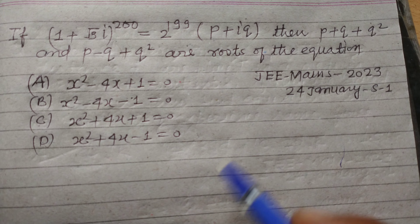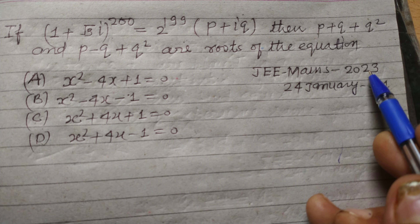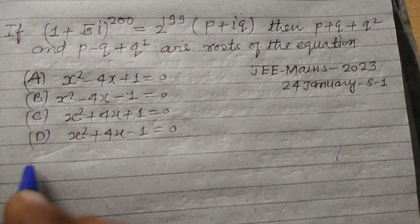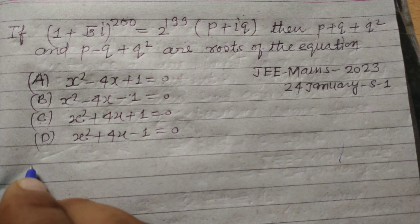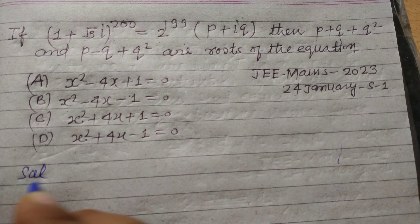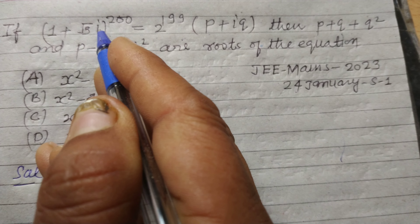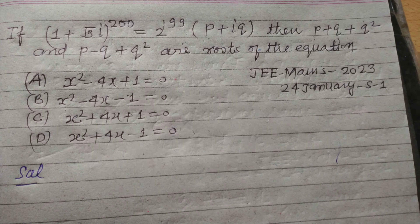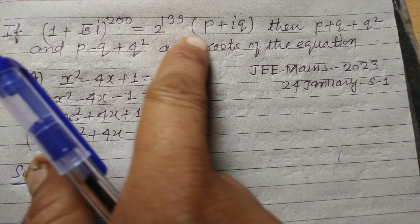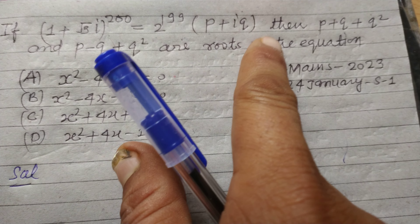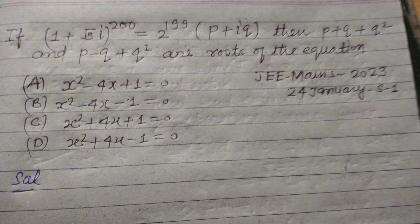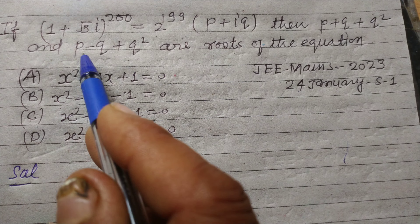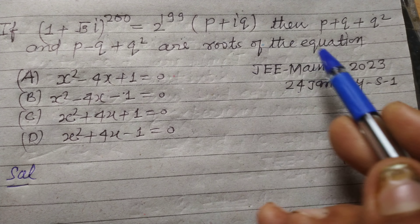Hello students and welcome to this YouTube channel J.E.M.A.S., 2023, 24th January. The first question from complex numbers: (1 + √3·i)^200 equals 2^199 into (p + i·q), then find that p + q + q² and p - q + q² are roots of which equation.